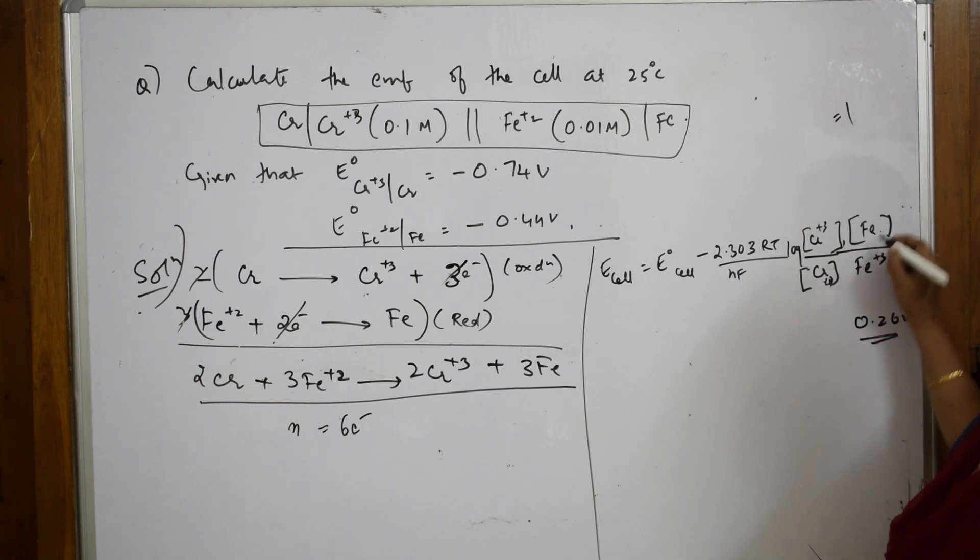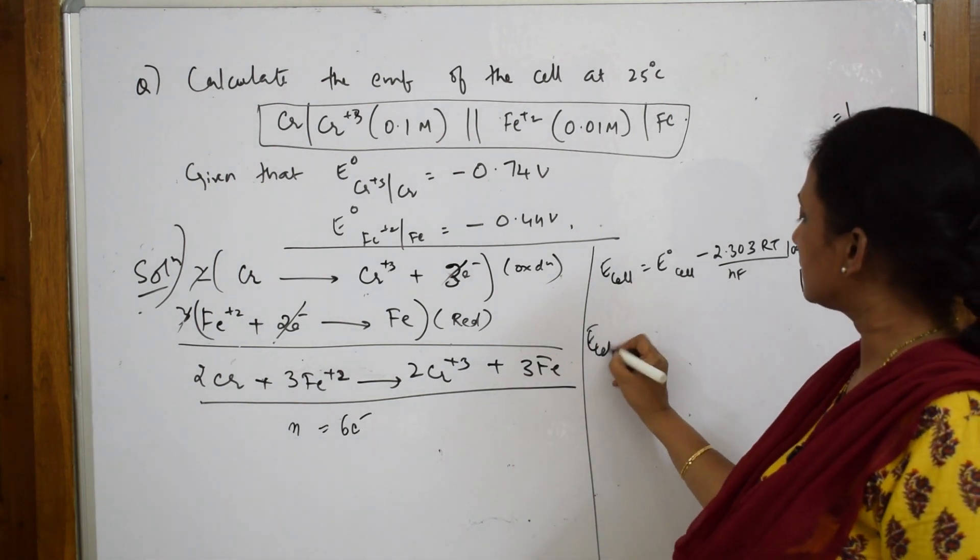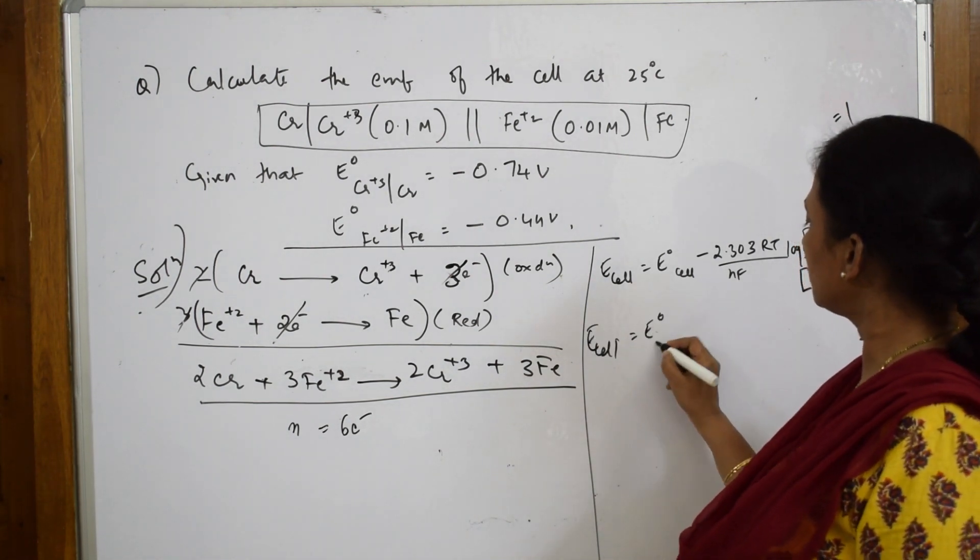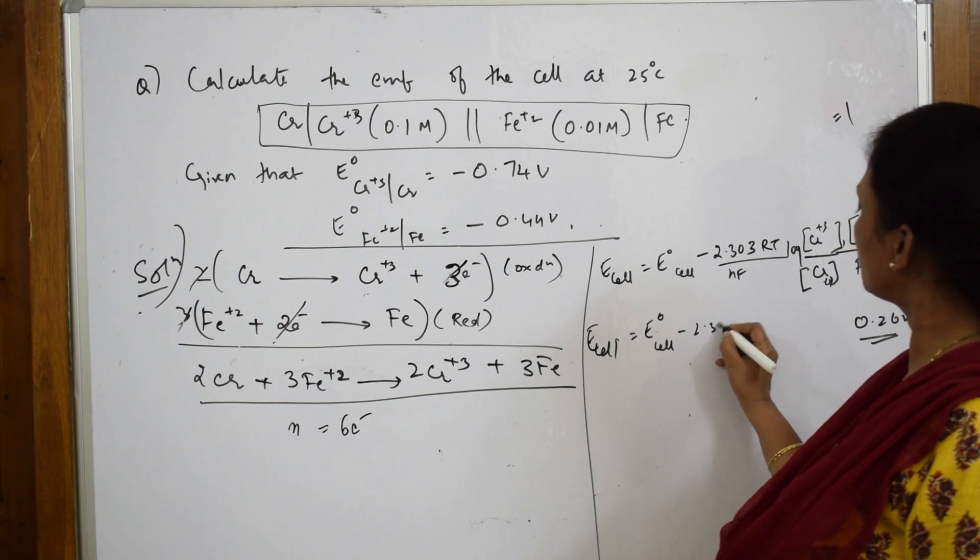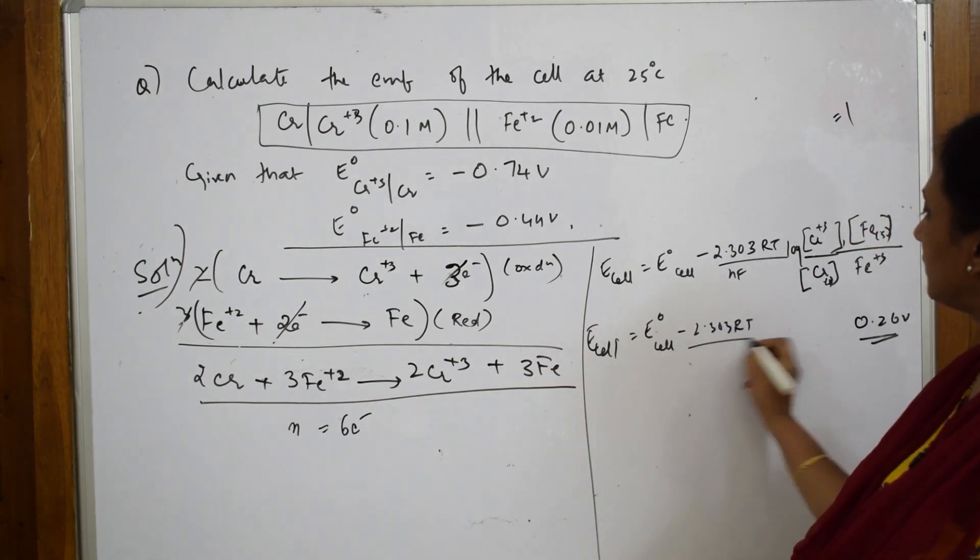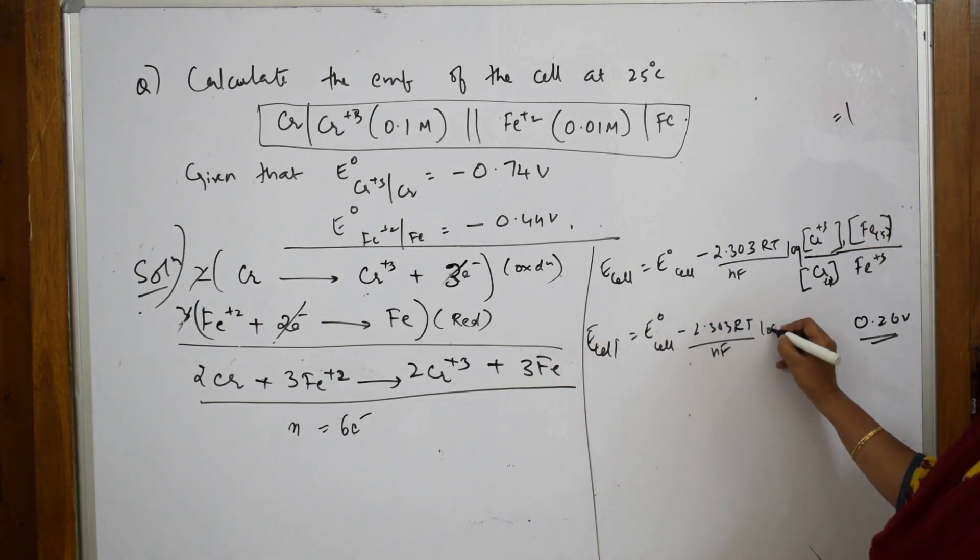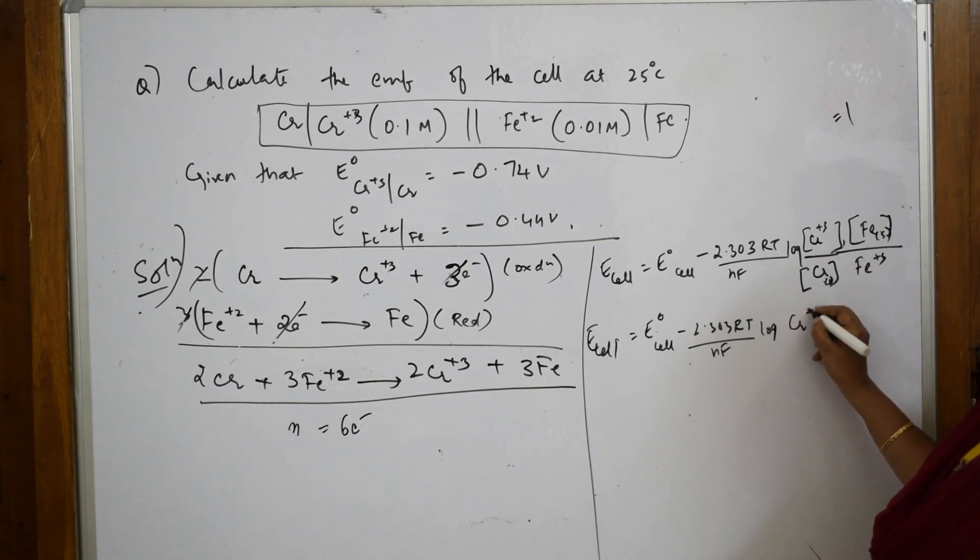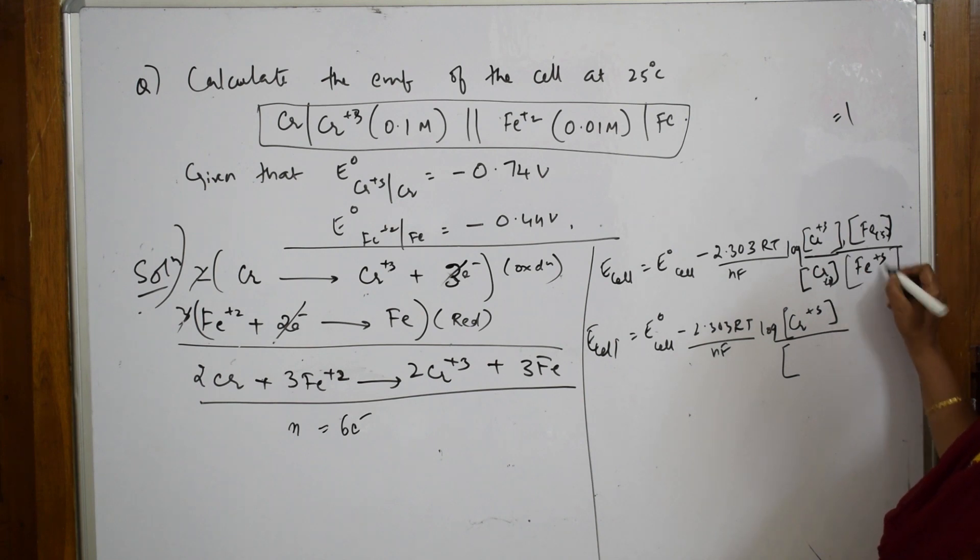Since Cr and Fe are both solids, their activity equals 1. So E_cell = E°_cell - (2.303RT/nF) log([Cr³⁺]/[Fe²⁺]).